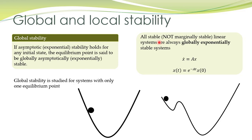Global stability is therefore only studied for systems with a single equilibrium point. For linear systems, if they are stable, they are always globally asymptotically stable as well as globally exponentially stable. This is apparent from the solution of a linear system: whatever the initial condition, if the matrix exponential term is decaying, all trajectories will converge to the equilibrium point at the origin. These were a few additional definitions, and in the next lecture we shall study the Lyapunov theorem that helps us determine the stability of equilibrium points for nonlinear systems.